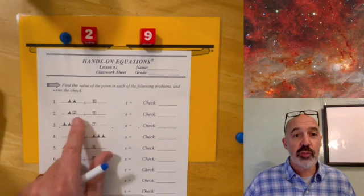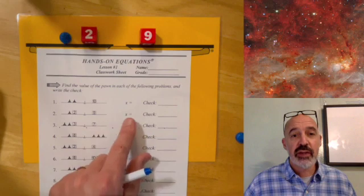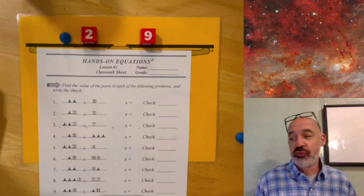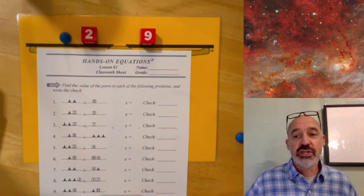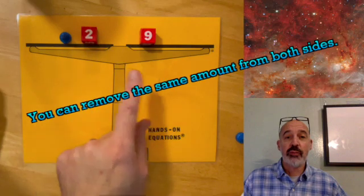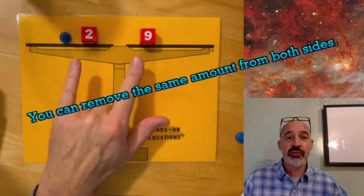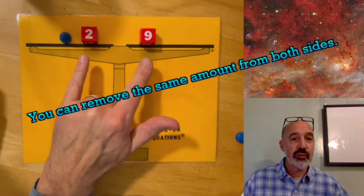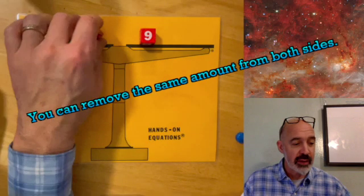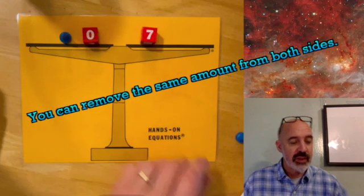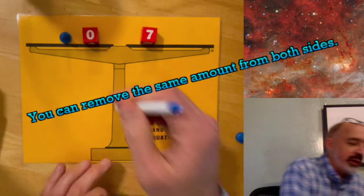Back to pawn plus two equals nine. X equals something, the pawn equals something, and then there's a check. The very first rule of Hands-On Equations is you can remove the same amount from both sides. This is a balance - I have two here and nine here. I can remove two from both sides and it stays in balance. My two becomes zero, my nine becomes seven, so I'm left with the pawn, which is X, must equal seven.